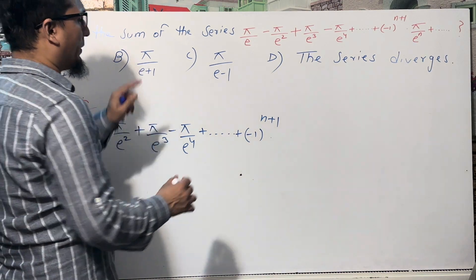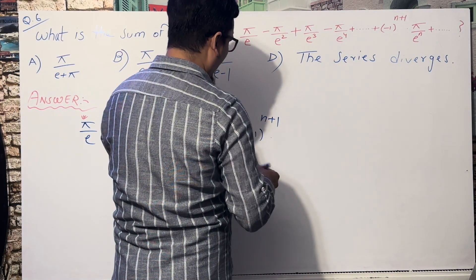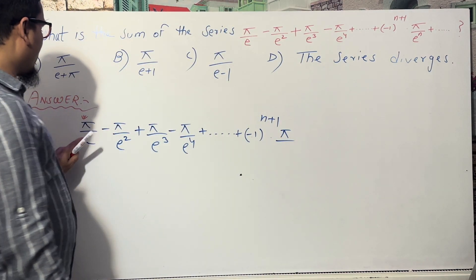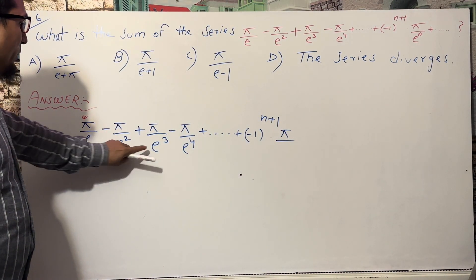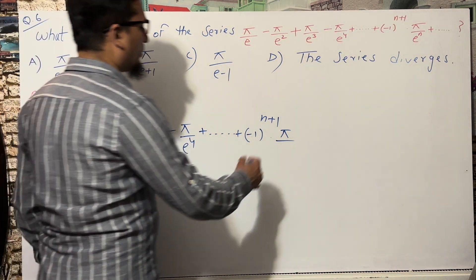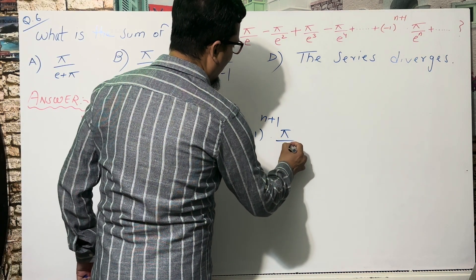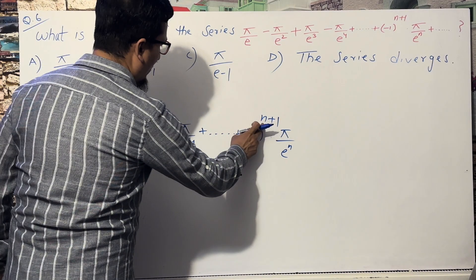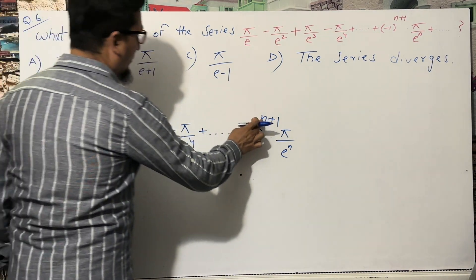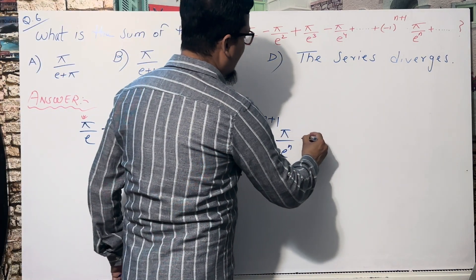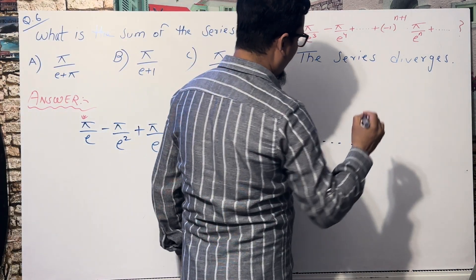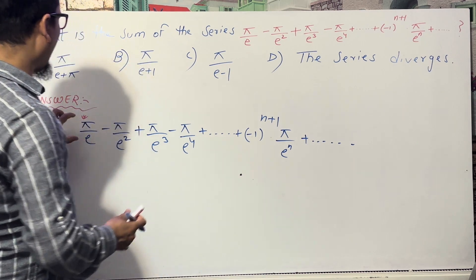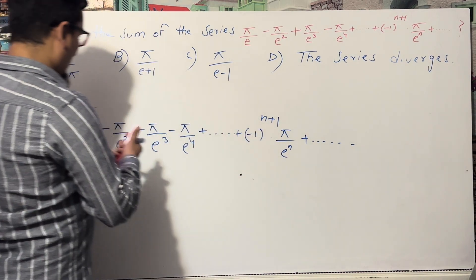The factor π is common throughout all terms. The denominators are e¹, e², e³, e⁴, and so on — so I write eⁿ in the denominator. For n = 1, 2, 3, 4 we get each successive term. This is an infinite series and we need to find its sum.